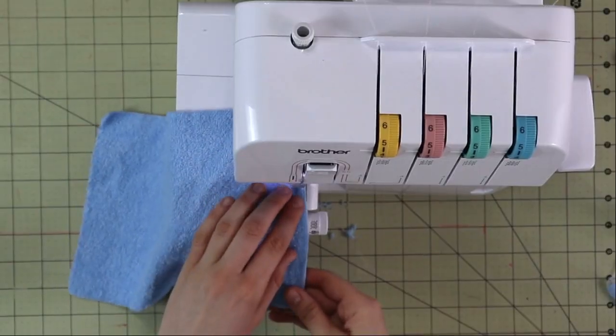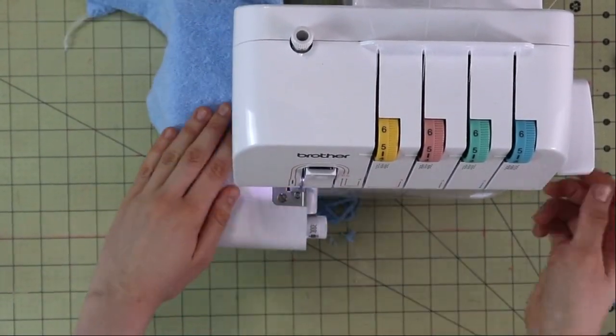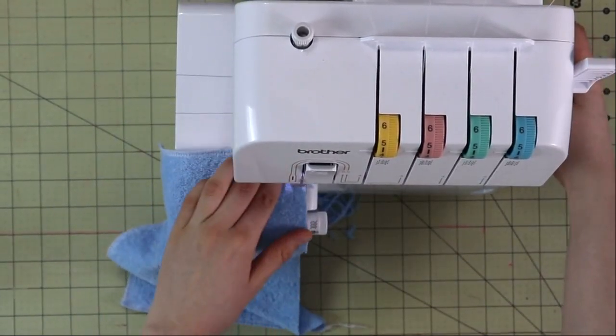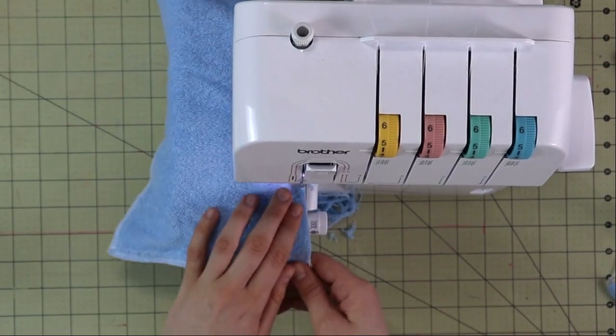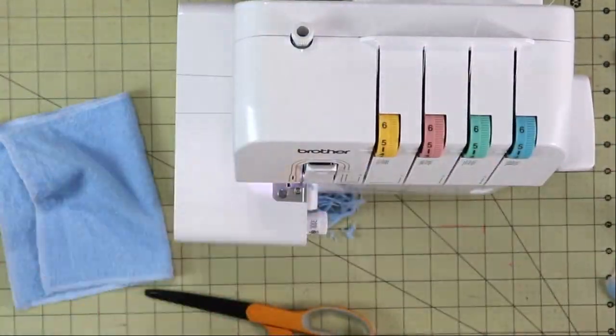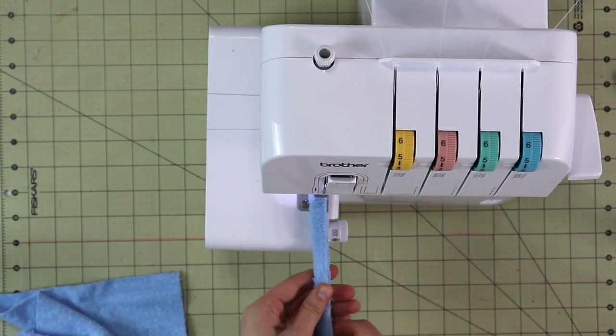Next let's serge or zigzag the edges of the rectangle so that way they don't fray. For the handle fold it in half and serge or zigzag the edge of it as well.